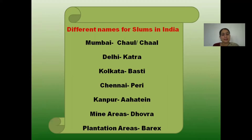In Delhi, it is called Kattra. In Kolkata, it is called Basti. In Chennai, it is called Peri. In Kanpur, it is called Ahate. In our mining areas we call it Dhandi Basti, and in the Bhagwani area it is called Barracks.